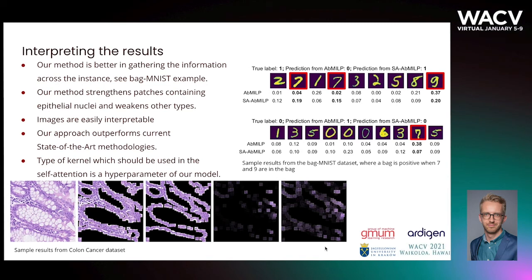On the bottom of the slide we can see, starting from the left, an example of an image from the colon cancer dataset, then patches containing any type of nucleus and epithelial nuclei in the middle. The last two images on the right present the weight of patches obtained by the attention-based MIL pooling and self-attention method. Our method strengthens the patches containing epithelial nuclei and weakens other patches like those containing nuclei in connective tissue called lamina propria, showing that our method emphasizes patches more important for the diagnosis. On the right we can see examples from the bags dataset where the bag is considered positive if 7 and 9 are within the bag, and our method emphasizes patches with 9 and 7 while the other method focuses only on 9.